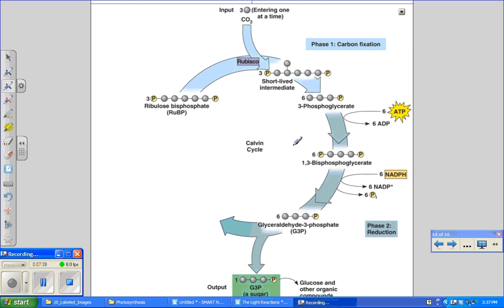Note that for every three molecules of CO2, there are six molecules of glyceraldehyde-3-phosphate, but only one molecule of this three carbon sugar can be counted as a net gain. The rest of those glyceraldehyde-3-phosphates are going to be used to regenerate our CO2 acceptor ribulose bisphosphate in order to keep the Calvin cycle going.